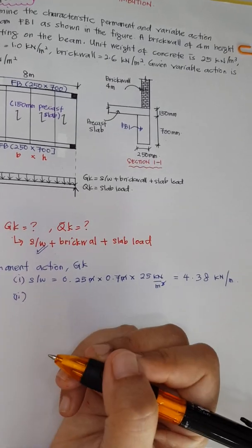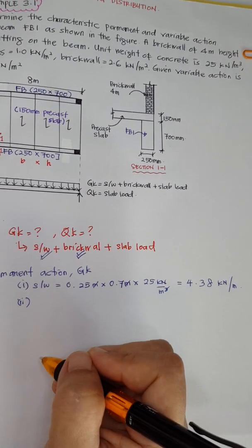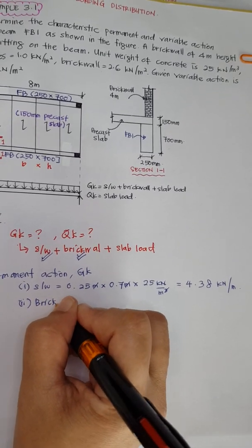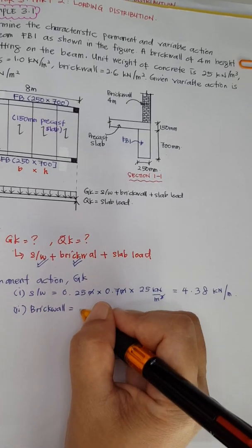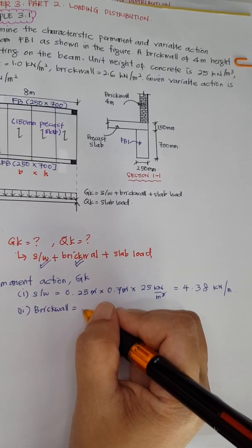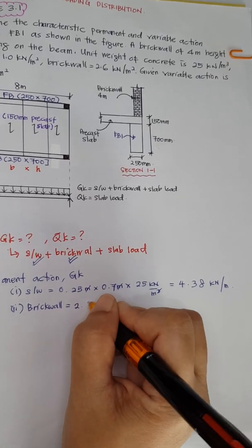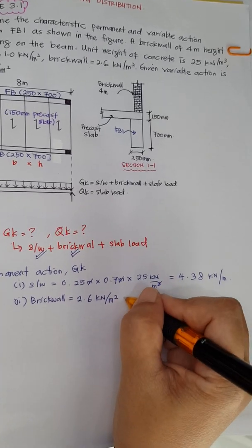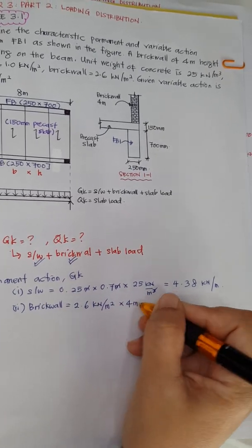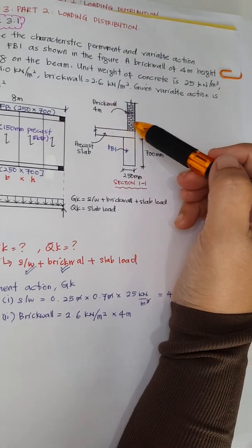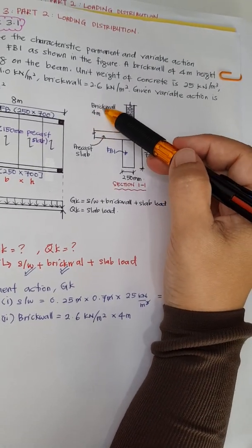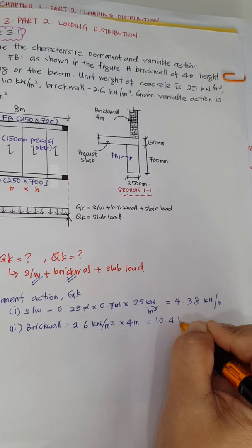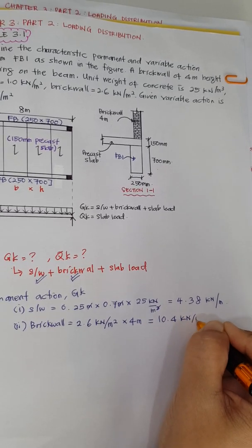Next is the brick wall. The unit weight of the brick wall is 2.6 kilonewton per meter square, multiplied by the height of the brick wall which is 4 meters. The answer is 10.4 kilonewton per meter.